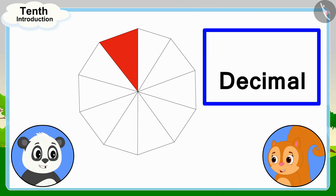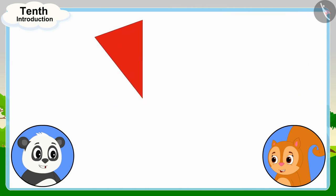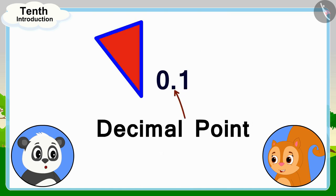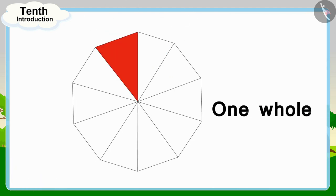Decimal means our whole is divided into 10 equal parts and we are taking one part out of these 10 parts. And we write this after the decimal point like this. And because this fraction is less than one whole, we write the number 0 in the units place before the decimal point.